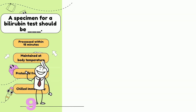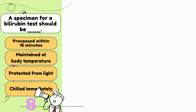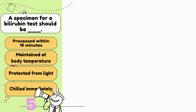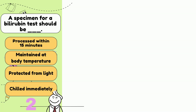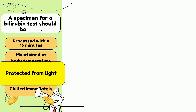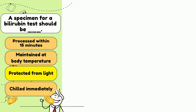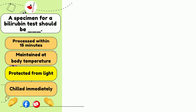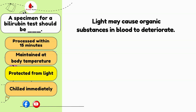A specimen for a bilirubin test should be: processed within 15 minutes, maintained at body temperature, protected from light, or chilled immediately. The answer is C: protected from light, because light may cause the substance to deteriorate.